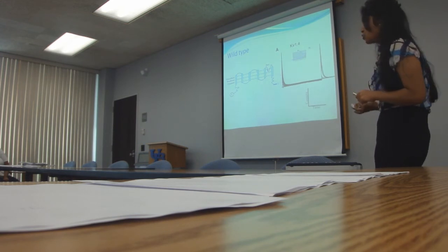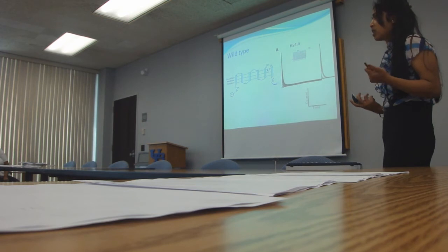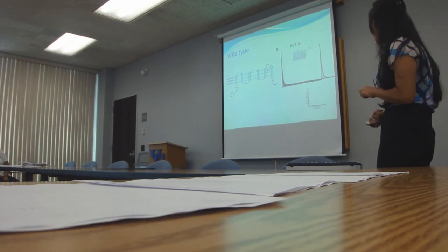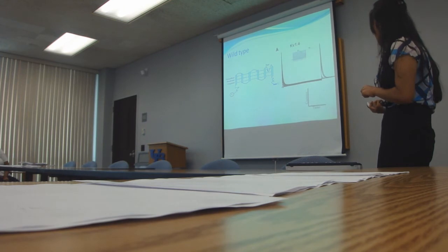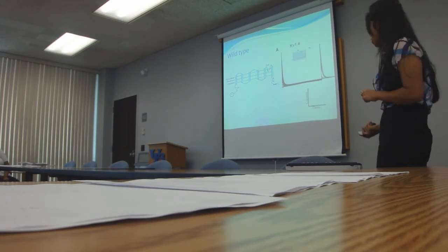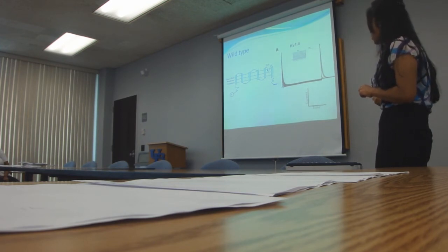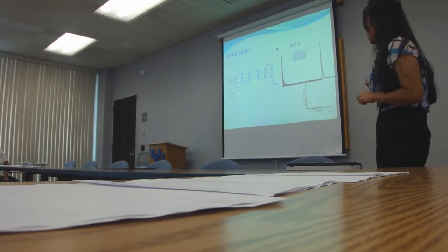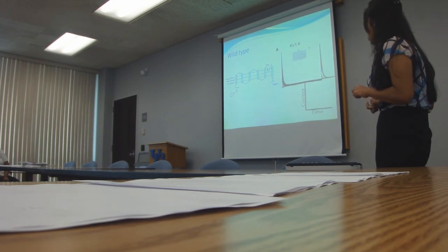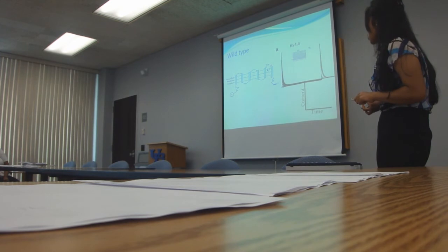This is the structure of the wild type. This box right here is a standard protocol that we follow whenever we are studying currents. This is our holding potential — the voltage that we set our channel at. P1 is what shows us inactivation. The reason you see so many lines is because we increase voltage in increments of 10 millivolts over time. P2 is the recovery. The scale is current by time. When the channel is activated, the graph increases, and when the channel is inactivated, the graph rapidly decreases. This rapid inactivation of the wild type is due to the N-type.